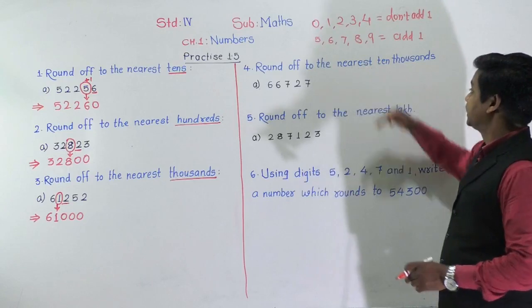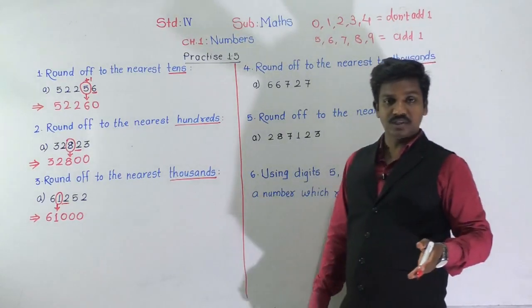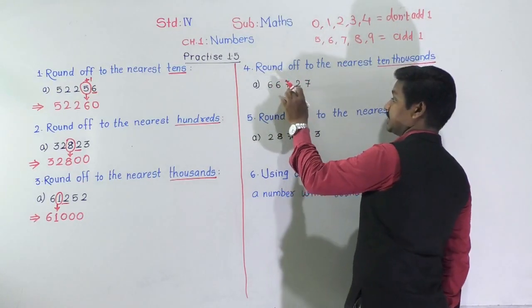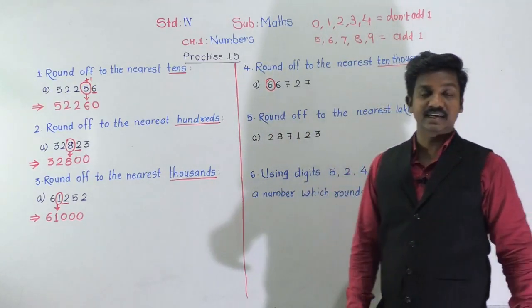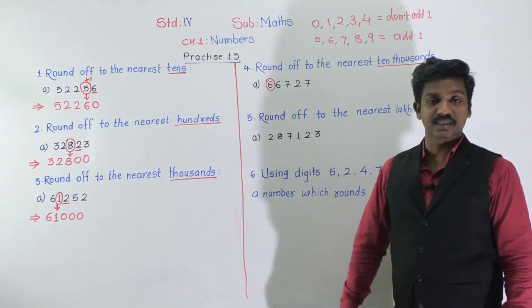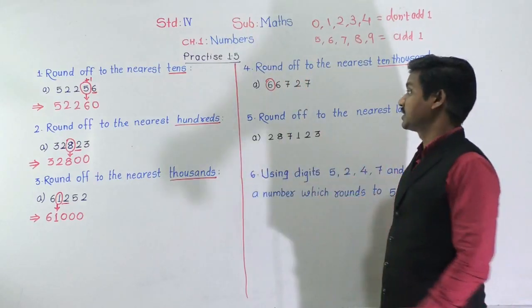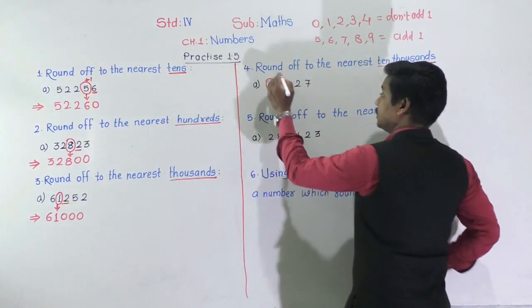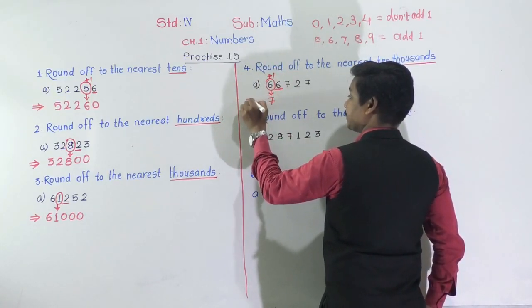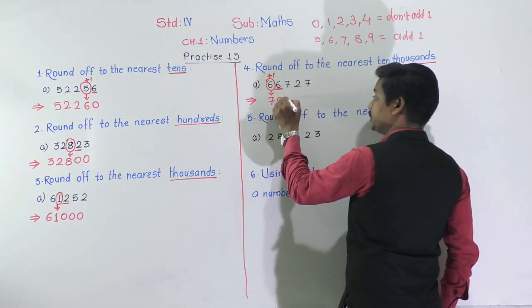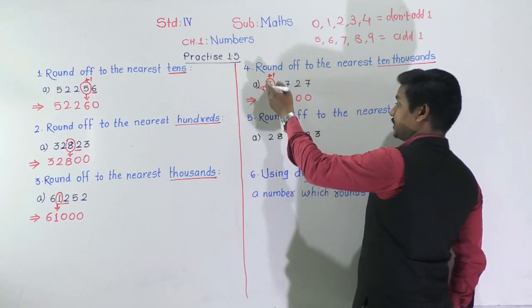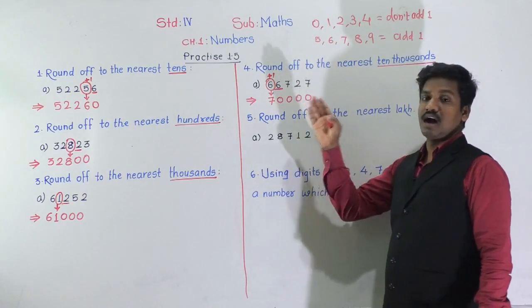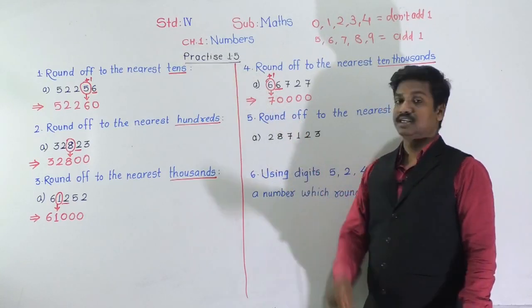Question 4: round off to the nearest 10,000. The number is 66,727. Find the 10,000 place: ones, tens, hundreds, thousands, ten thousands — 6 is at the 10,000 place. See the next digit — it is 6. Since 6 is the next digit, it comes in our second rule: add 1. So 6 plus 1 equals 7. For the next four digits, put four zeros, and there is no digit before the 10,000 place. So 66,727 becomes 70,000 after rounding to the nearest 10,000.